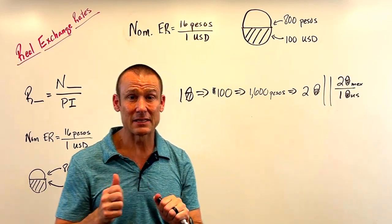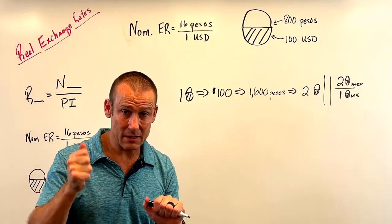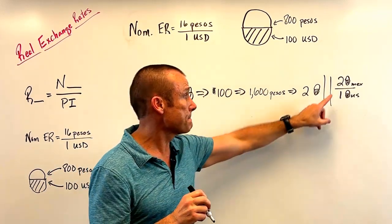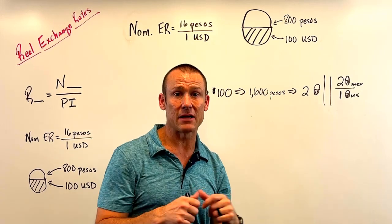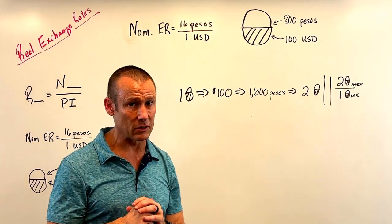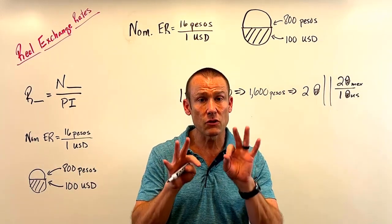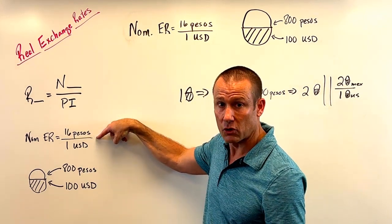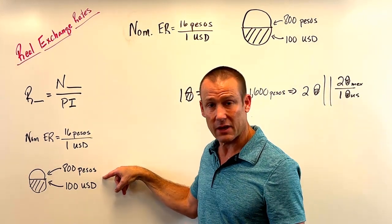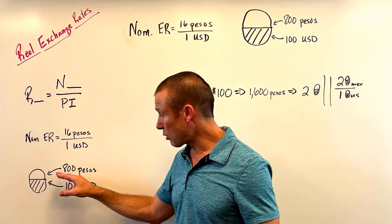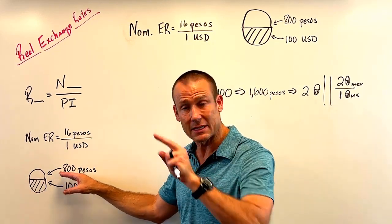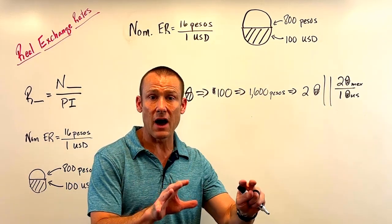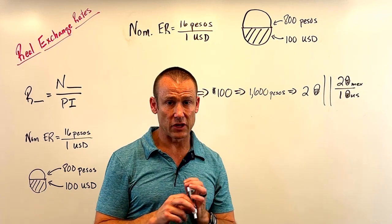That's the real exchange rate — real purchasing power, real goods and services. When I take my one dollar, go to the exchange market, exchange at the nominal exchange rate and get 16 pesos, I'm not getting 16 times the purchasing power — that's a nominal amount. What I am getting is twice the purchasing power. That's what the real exchange rate is telling me: my purchasing power is doubling.